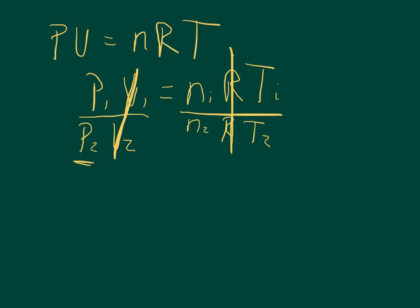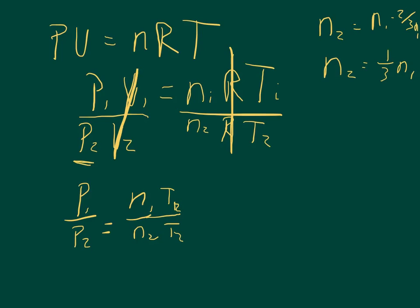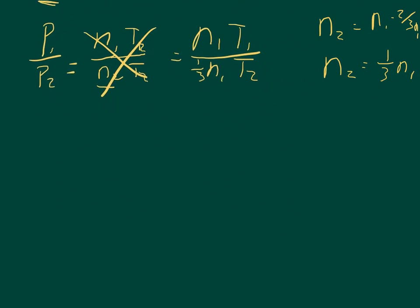Since it's saying that two-thirds of the moles are withdrawn, that means that N2 is equal to N1 minus two-thirds of N1. So in other words, N2 equals one-third of N1. And so I can rewrite my equation: P1 over P2 is equal to N1 over N2 times T1 over T2. And I can substitute in one-third of N1 for my N2. So I get equals N1 over T1 divided by one-third N1 times T2.